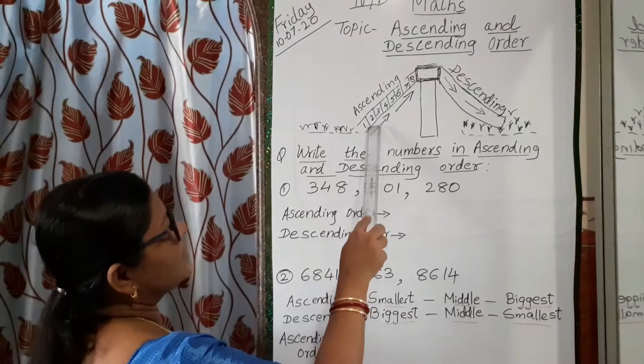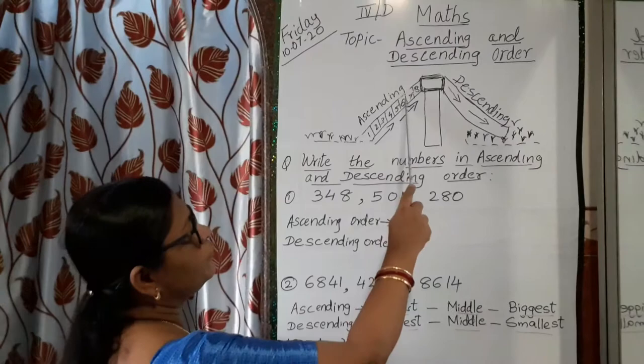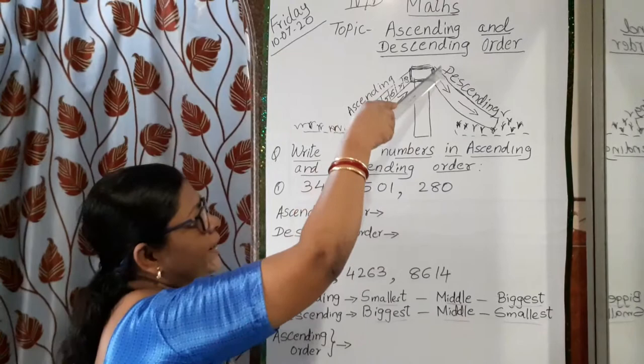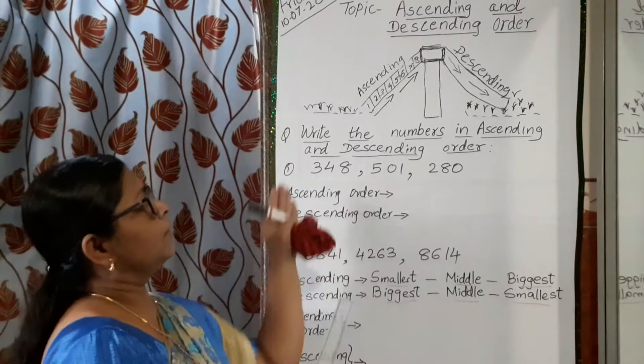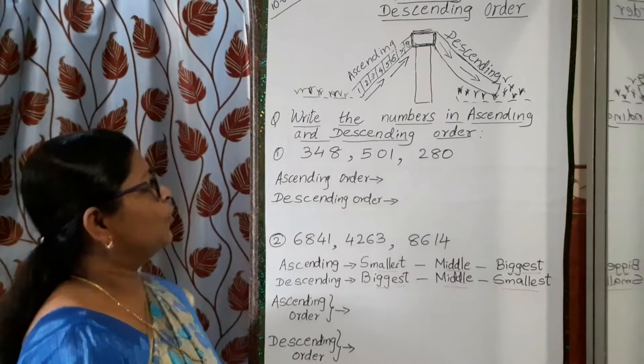So you can see here — as I showed you, see how the numbers go up: 1, 2, 3, 4, 5, 6, 7, 8 — like that it goes up. And after that when you are coming down, see: 8, 7, 6, 5, 4, 3, 2, 1. So the order is changing — climbing up is called ascending order, climbing down is called descending order.